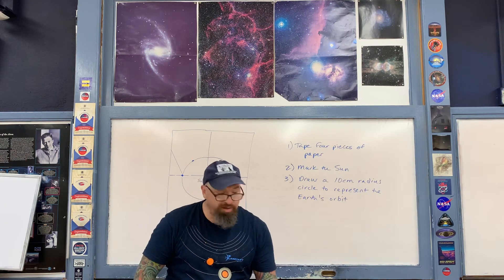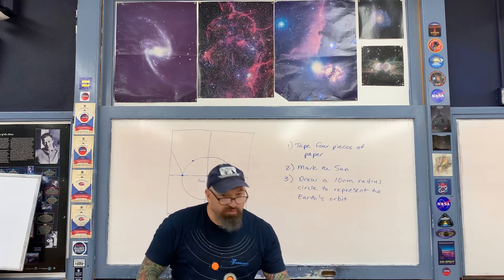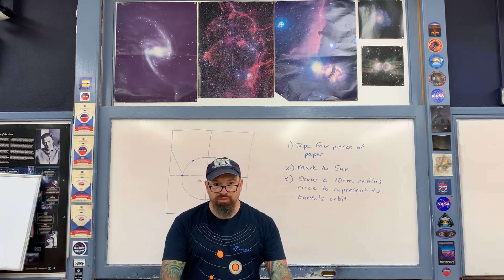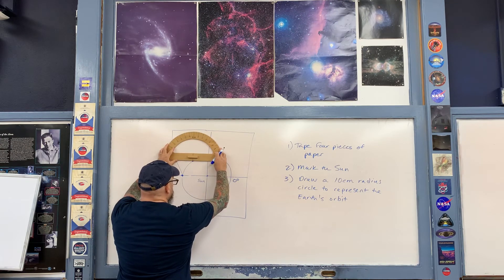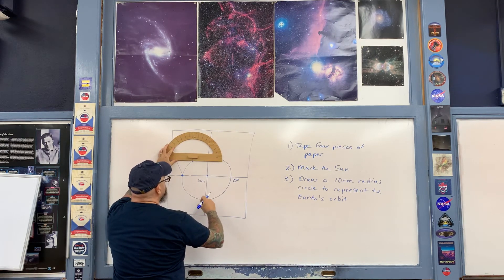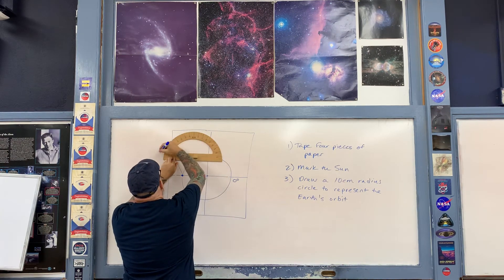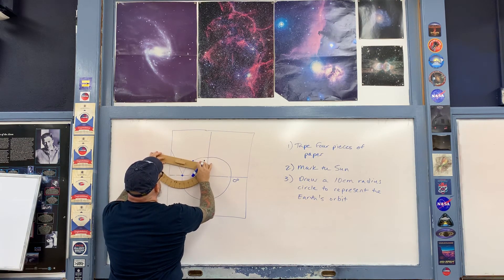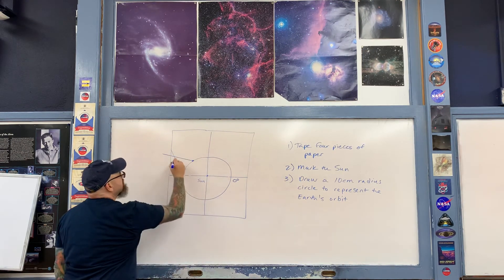On February 5th, the geocentric longitude of Mars was 168 degrees. Center the protractor on the Earth's position for February 5th, measure 168 degrees, and draw a line in that direction from the Earth on that date.